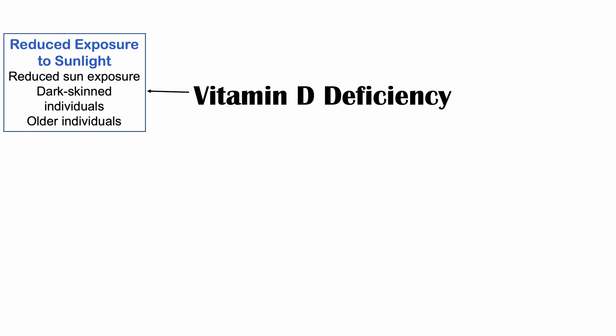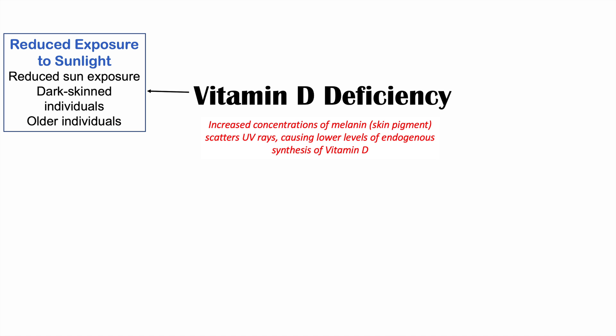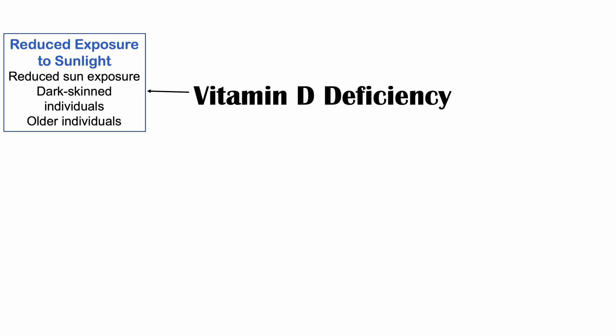One cause of vitamin D deficiency is reduced exposure to sunlight. This can be seen in people with generally reduced sun exposure — those who are inside a lot or who are institutionalized and unable to get sun exposure. Dark-skinned individuals are at increased risk, as are older individuals, who have a reduced ability to absorb vitamin D.